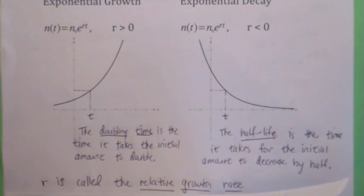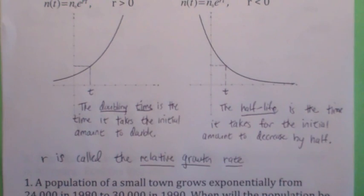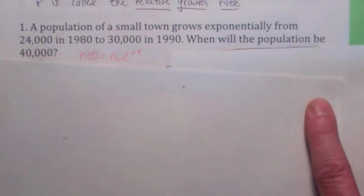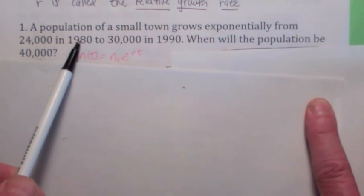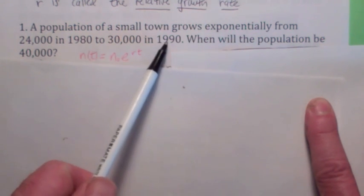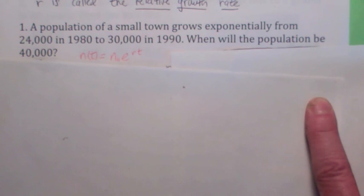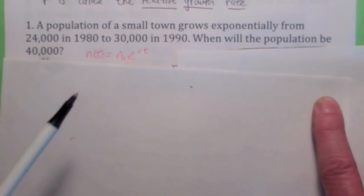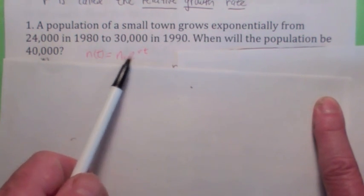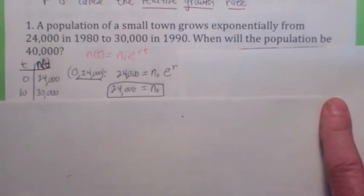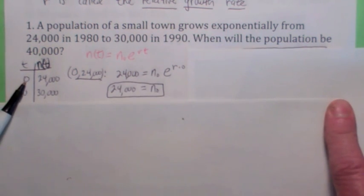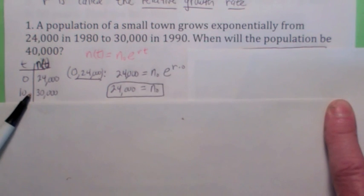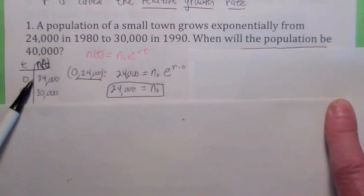Let's look at some problems. Suppose you have a small town where the population is growing exponentially. In 1980, which we call t equals zero, you have 24,000. Then at t equals 10, or 1990, you have 30,000. The question is: when will the population be 40,000? The goal is to come up with the equation — we need to find n-zero and r. It's helpful to organize your work. At t equals zero you have 24,000, and at t equals 10 you have 30,000. To find n-zero, observe that this is the initial population.